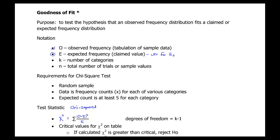Requirements that we need to check in order to do this test: it has to be a random sample, we need to have frequency data — so numbers of individuals in each category — and the expected count has to be at least five for each category. Those are some things we'll check at the beginning of every problem.